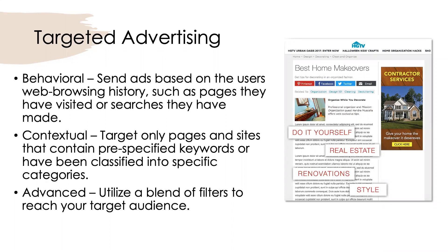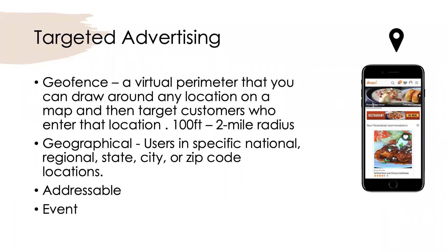Advanced targeting lets you utilize a blend of different filters — that huge filter list. For example, we could apply an age bracket and also make sure they own their home, maybe with a household income over $100,000, because we're a renovation company. If somebody's going to remodel their home, they obviously own it — they're not going to be a renter. That really lets you utilize the filters and reach an audience that would specifically use your product.